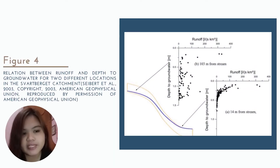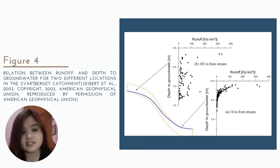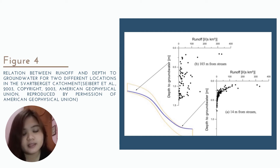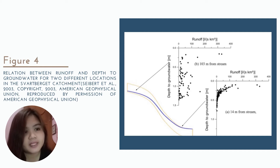Figure 4 shows the relationship between runoff and groundwater depth at two hillslope locations: 14 meters and 103 meters from the stream. It indicates that runoff is more closely related to groundwater depth near a stream than it is higher up the hillslope. As we can observe in Figure 4, at 14 meters from the stream, the flow is already heading towards the stream, so the flow is faster. When the flow is faster, less water infiltrates the ground. Conversely, when the flow or runoff is slower, more water infiltrates into the ground.